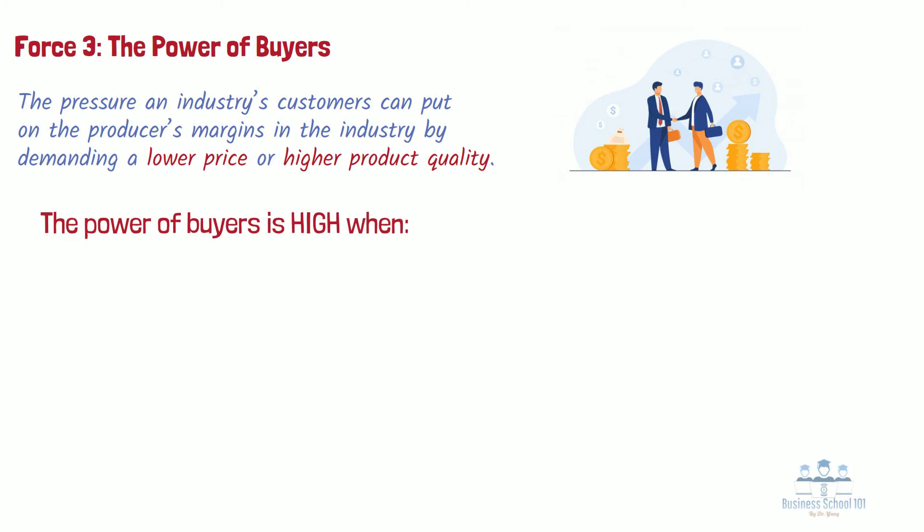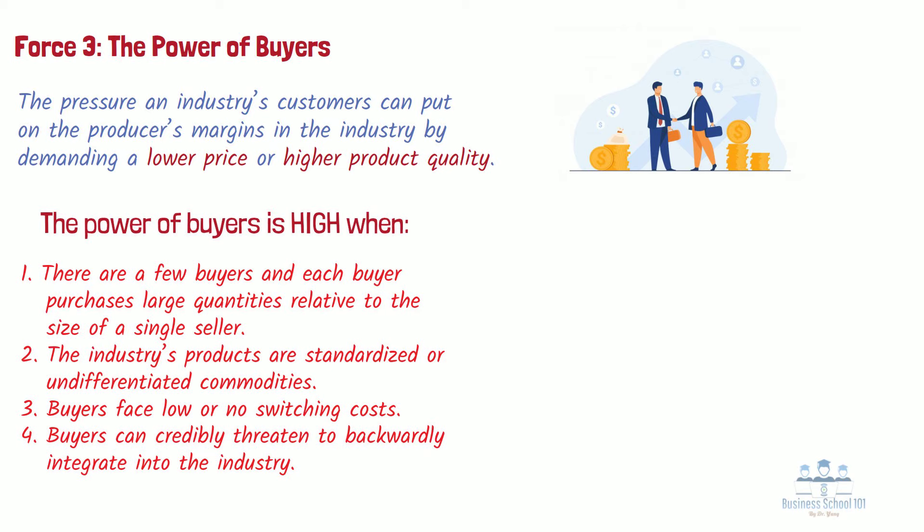The power of buyers is high when: there are few buyers and each buyer purchases large quantities relative to the size of a single seller; the industry's products are standardized or undifferentiated commodities; buyers face low or no switching costs; and buyers can credibly threaten to backwardly integrate into the industry.